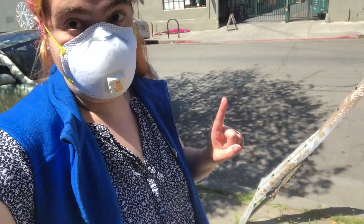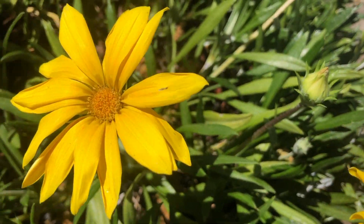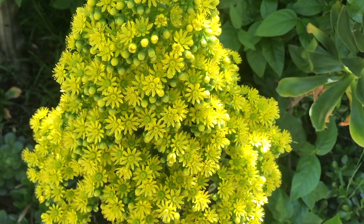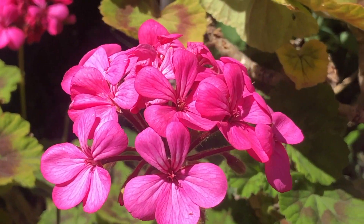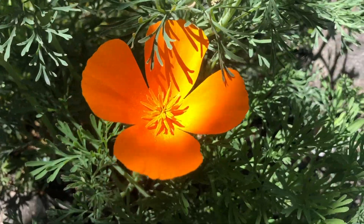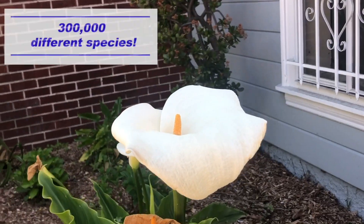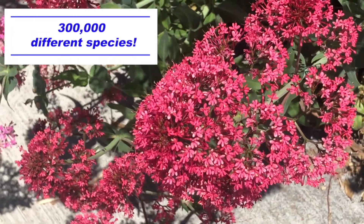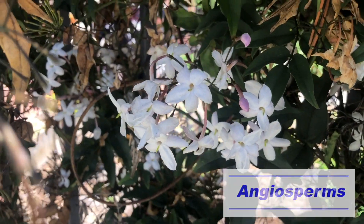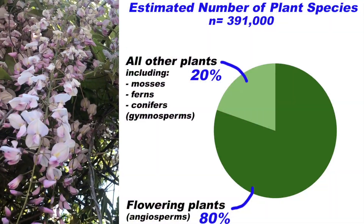Today I'm going to take you on a walk through my neighborhood and we're going to explore what different flowers we can find. Before leaving the house I put on my mask and then began searching for flowers. I was able to find many flowers of different colors, shapes, sizes, and quantities and was astounded by the huge variety. Later I did some research and found out that scientists estimate there are over 300,000 different species of flowering plants, or as they're also called, angiosperms — about 80% of all plant species on the planet.